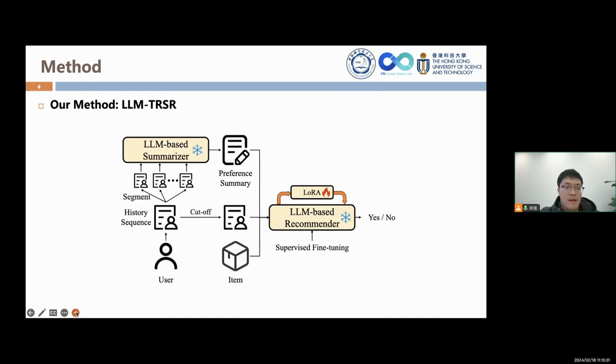To solve the above challenges, we propose the LLM-TRSR model. We first propose to segment the input text into different blocks, and we use an LLM-based summarizer to get the user preference summary. Then, we propose to use an LLM-based recommender to get the recommendation results.